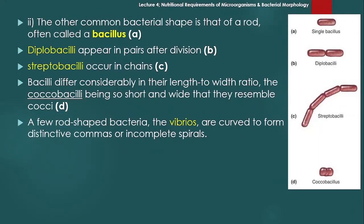Bacteria کا دوسرا common shape ہے bacillus — rod shape bacteria کو bacillus بولتے ہیں۔ Diplobacilli appear in pairs after division — جس طرح figure B میں mention ہے، دو bacilli اکٹھے ہوں تو diplobacilli۔ Streptobacilli occur in chains — rod shape bacteria ہے لیکن ایک chain بنائی ہوئی ہے تو ایسے کو streptobacilli بولتے ہیں۔ Coccobacilli وہ ہیں جن کا length اور width تقریباً برابر ہو — نہ بالکل rod، نہ بالکل circular۔